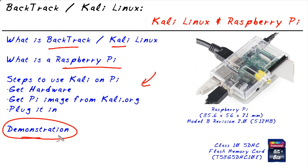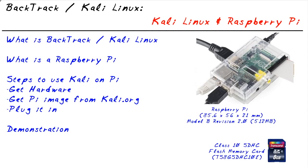Let's begin with a brief discussion about the history of Backtrack. Backtrack is a Linux distribution. You can download it and run it from a CD, or install it to your computer. Why would anyone want to use Backtrack? Because it comes with, as part of the distribution, hundreds and hundreds of attack tools.